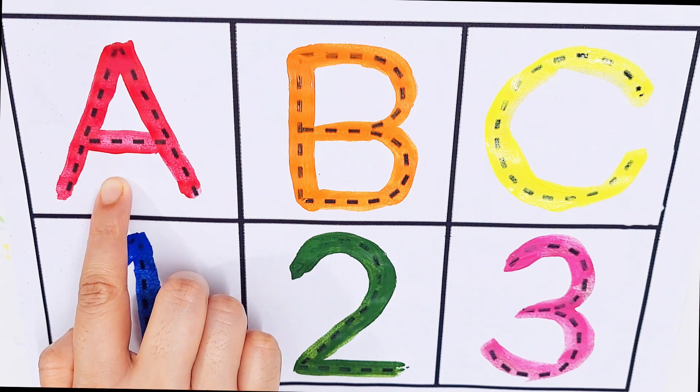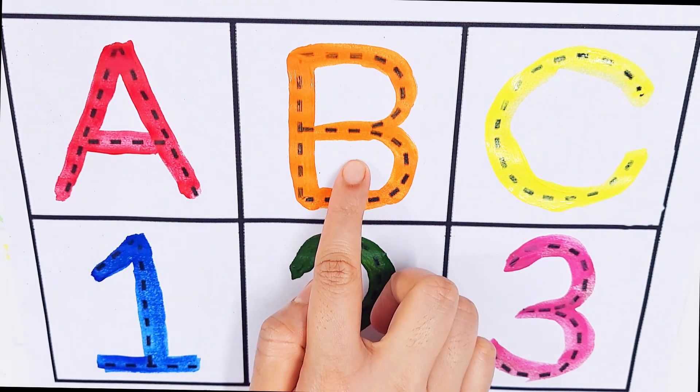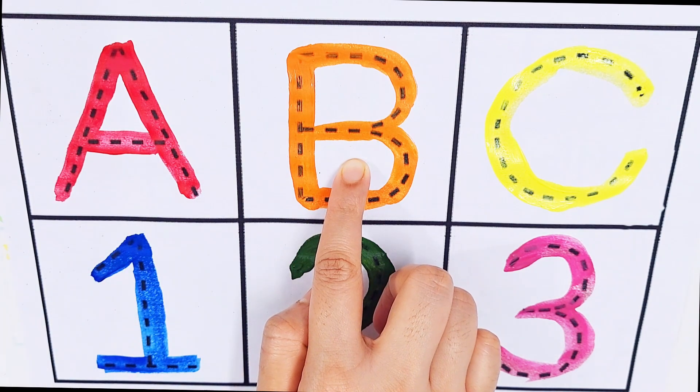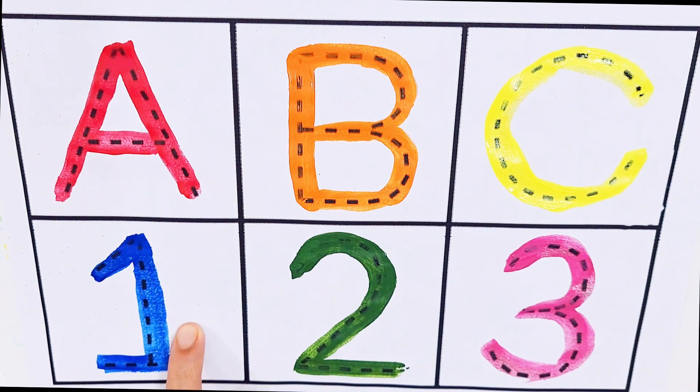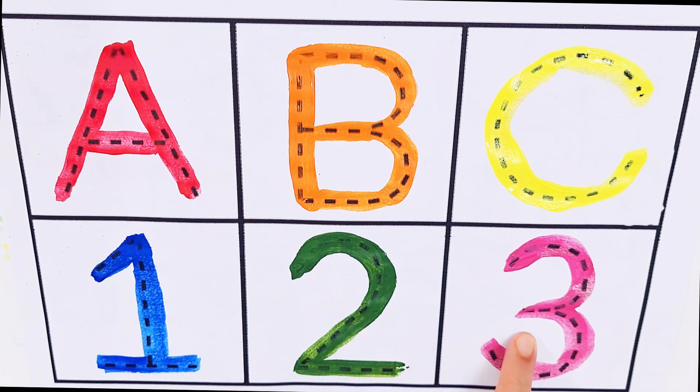A, A for apple. B, B for bus. C, C for candy. Number one, number two, number three.